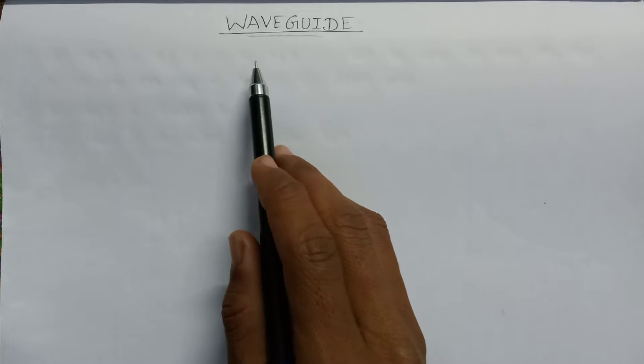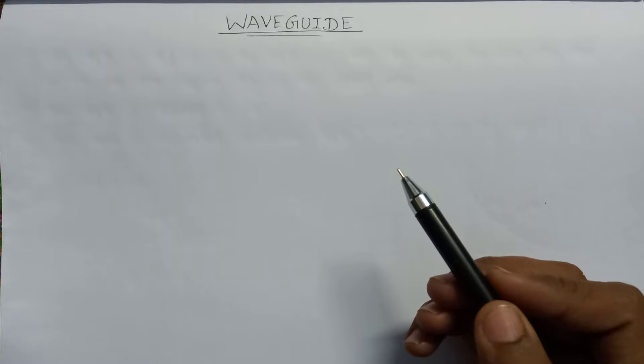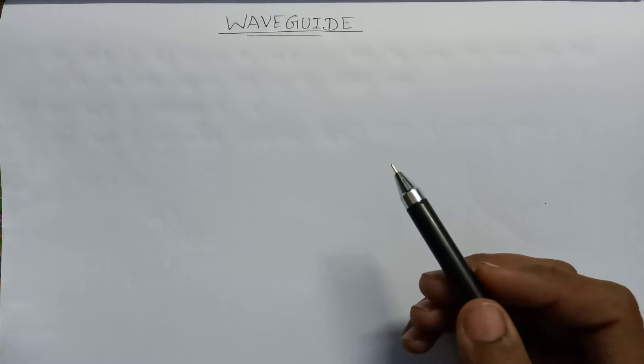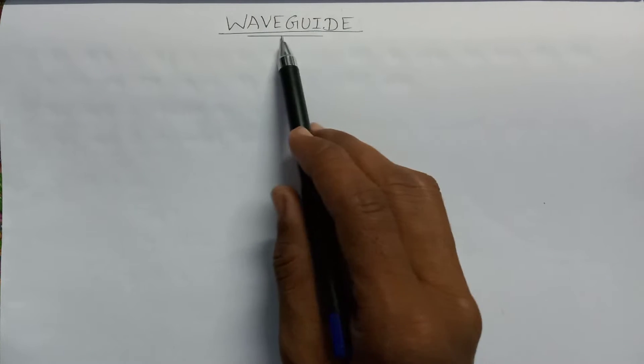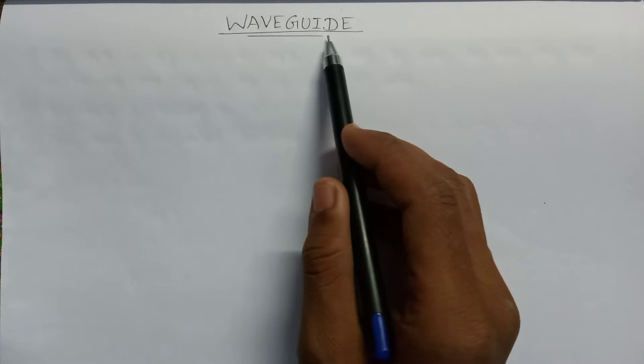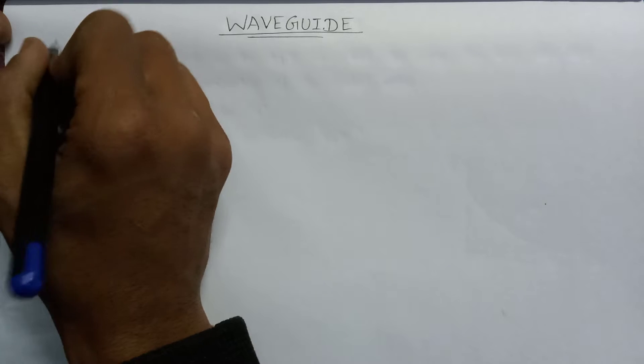Welcome all. In this lecture, we are going to study about waveguide. Waveguide is defined as any structure that guides the electromagnetic wave. As its name suggests, wave and guide, it guides the electromagnetic wave passing through it.